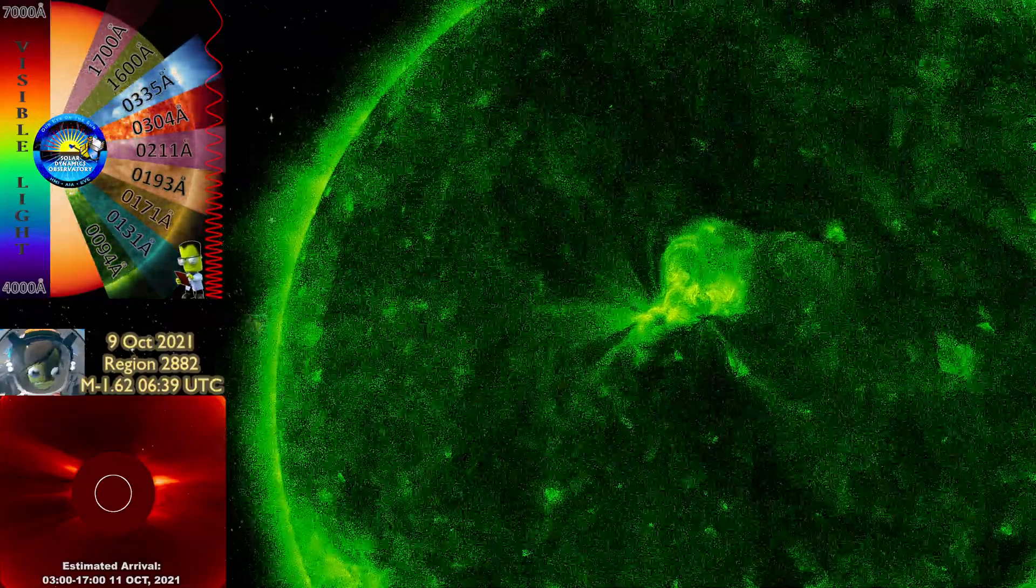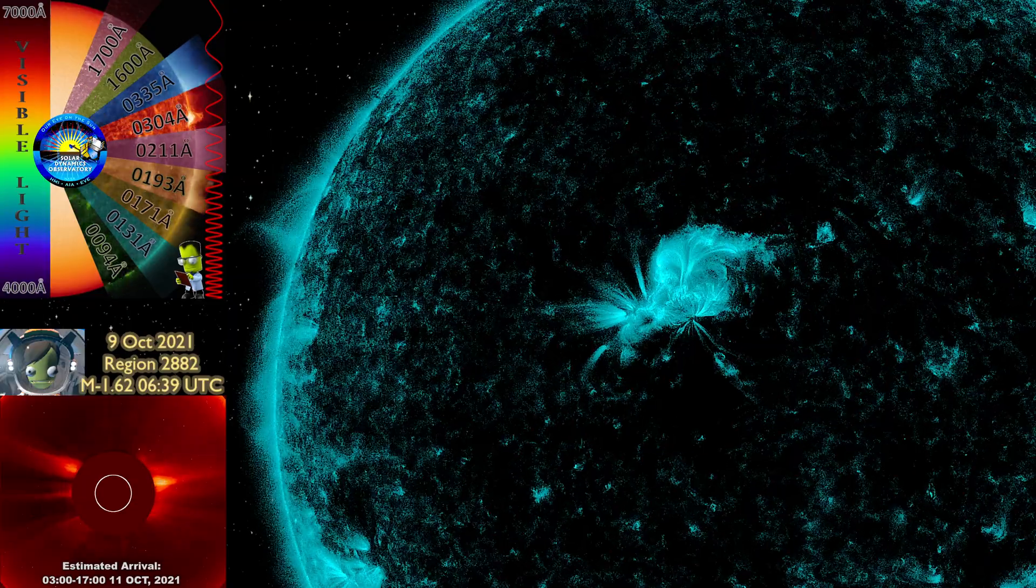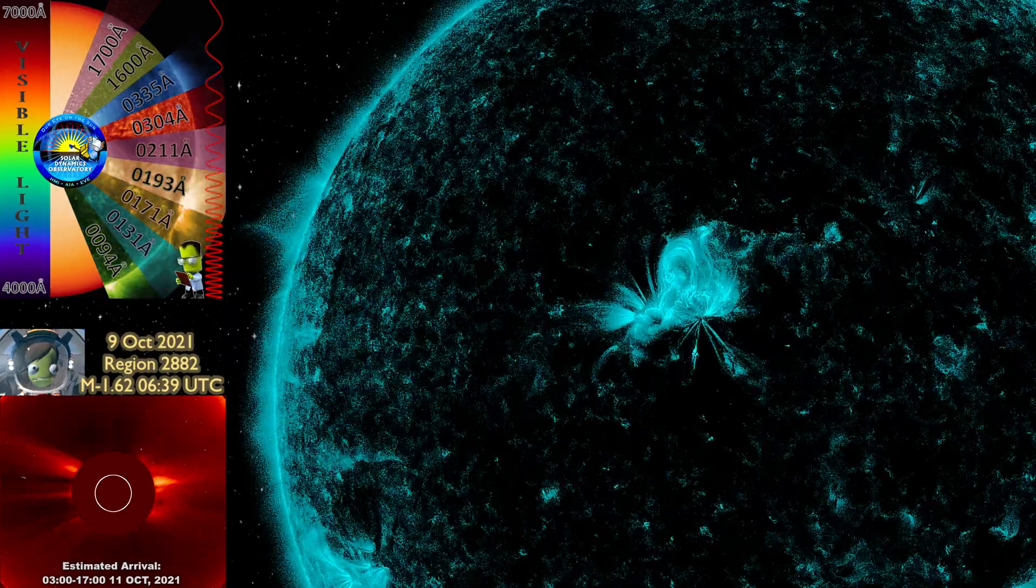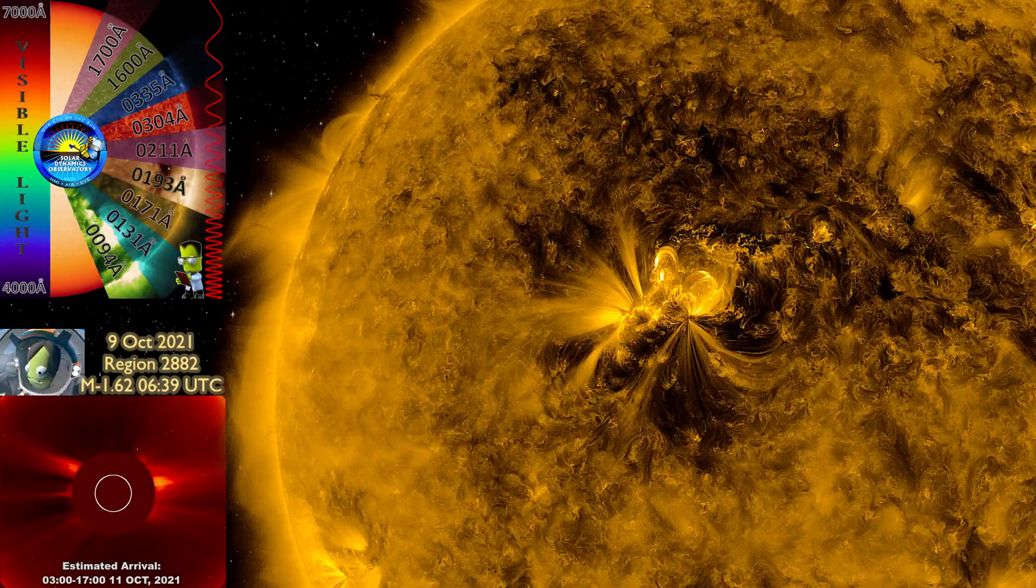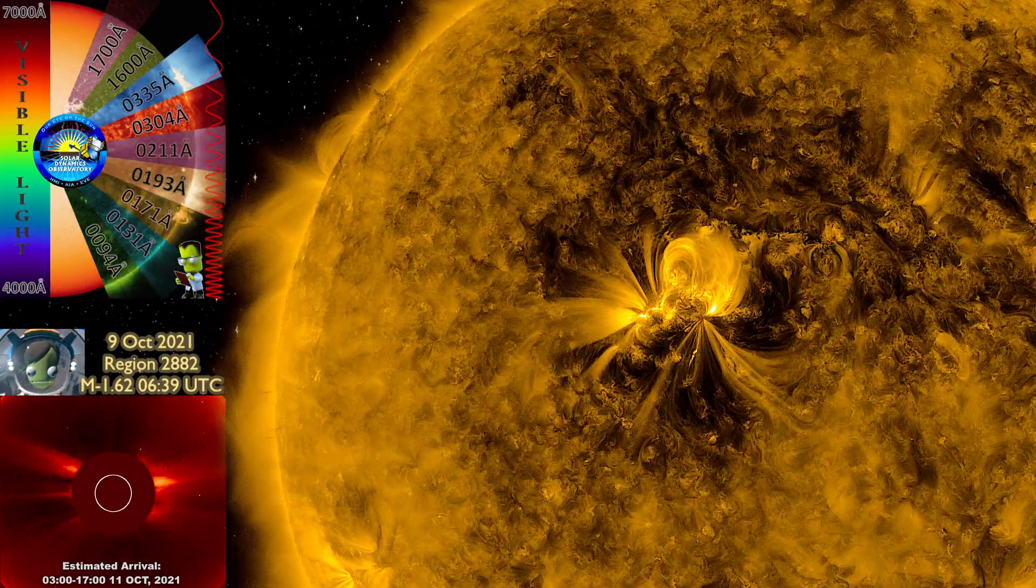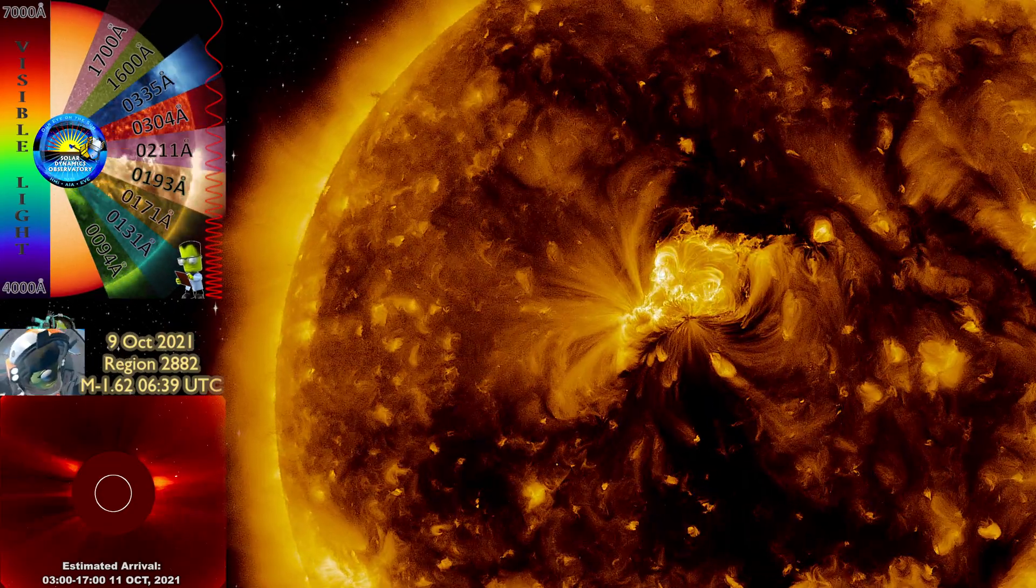Today we saw at 0639 UTC on 9 October 2021 a Class M 1.62 coronal mass ejection from region 2882. The estimated arrival of this coronal mass ejection to impact with the magnetosphere of Earth is around 0300 to 1700, 11 October 2021.